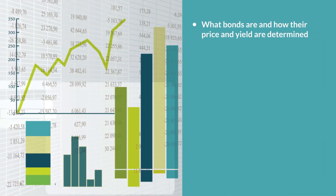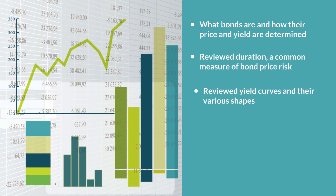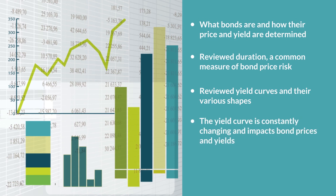Now you know what bonds are and how their price and yield are determined. We also reviewed duration, a common measure of bond price risk, as well as yield curves and their various shapes and strategies investors might use based on those yield curves. As you saw in our examples, the yield curve is constantly changing, which does impact bond prices and yields. Understanding these interactions allows investors to better prepare their portfolio in a variety of interest rate scenarios. Thank you for participating in today's session.